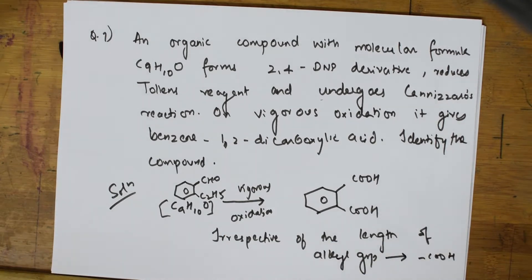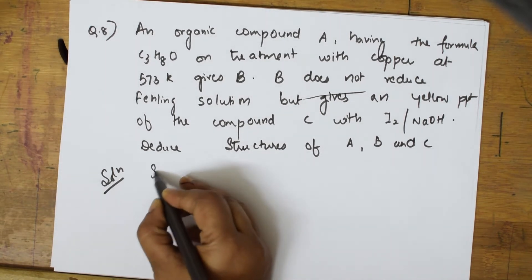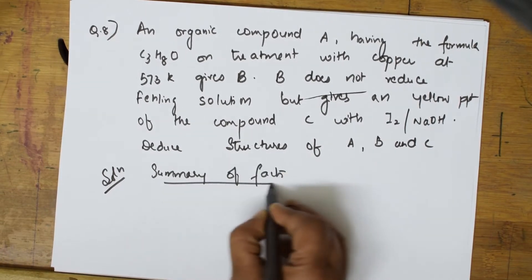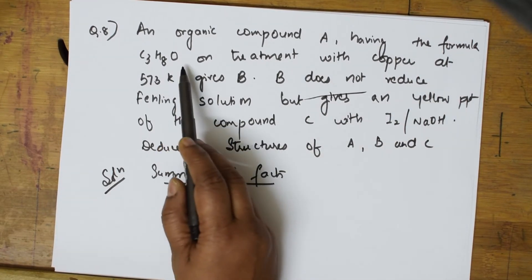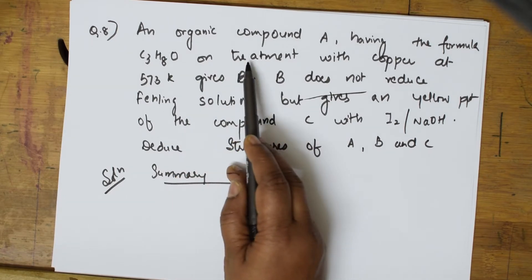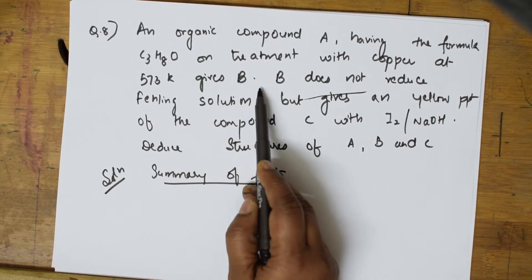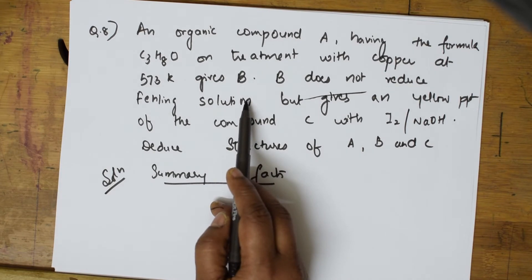Let us come back and start solving the eighth question. As soon as a paragraph-based question is given, write the summary of facts first. They give an organic compound A with molecular formula C3H8O. On treatment with copper at 573 Kelvin it gives compound B.